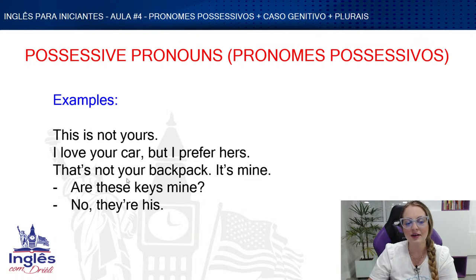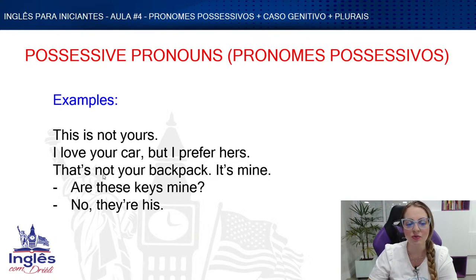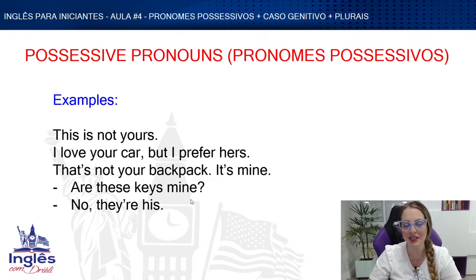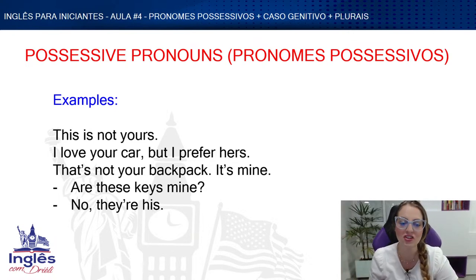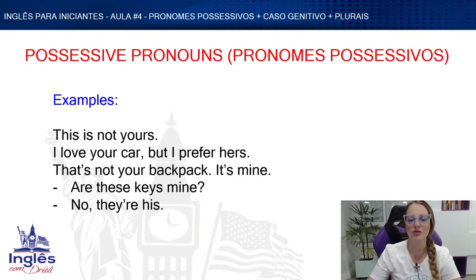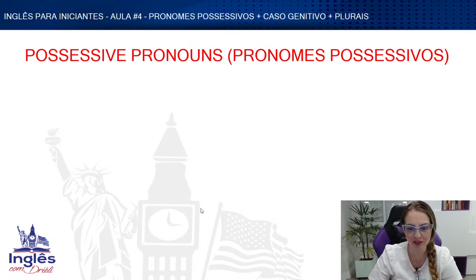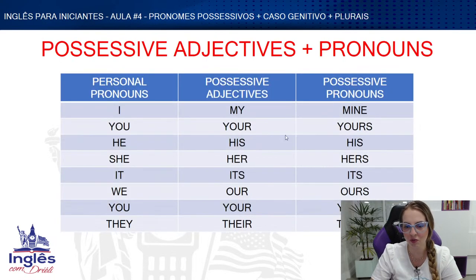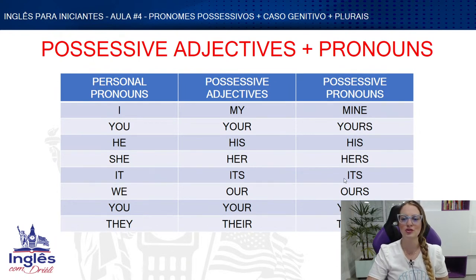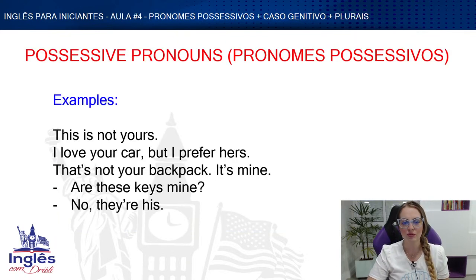'That's not your backpack, it's mine' — instead of saying 'it's my backpack' again, I simply say 'it's mine.' 'Are these keys mine?' — 'No, they're his.' I don't say 'no, they're his keys' — we already know I'm talking about keys, so I use just the possessive pronoun 'his.' Notice that 'his' and 'its' happen to be the same in both possessive adjective and possessive pronoun forms.